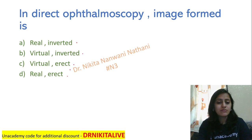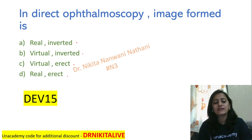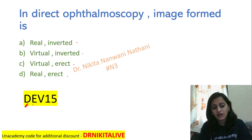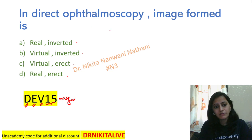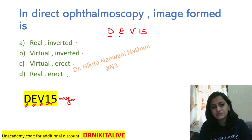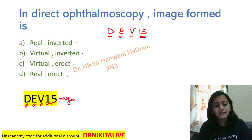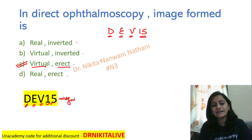The trick to remember this is the mnemonic DEV15. In direct ophthalmoscopy, the image is erect and virtual — that's D for direct, E for erect, V for virtual — and 15 indicates the magnification, meaning it is 15 times magnified. So the correct answer is C: virtual and erect.